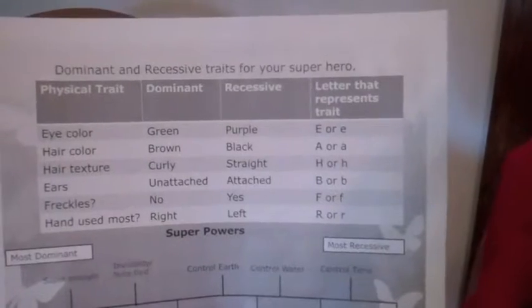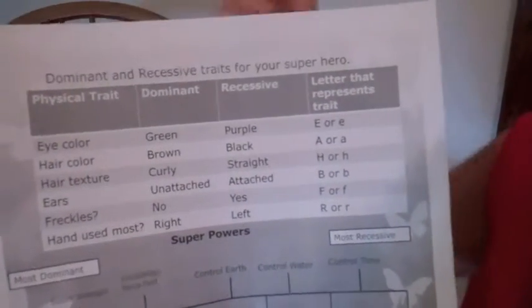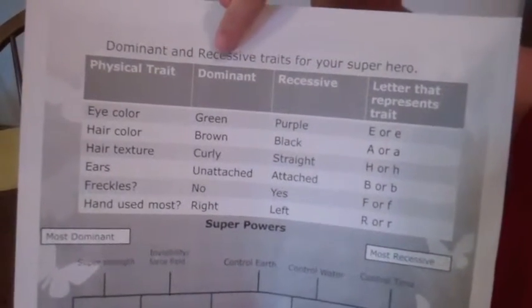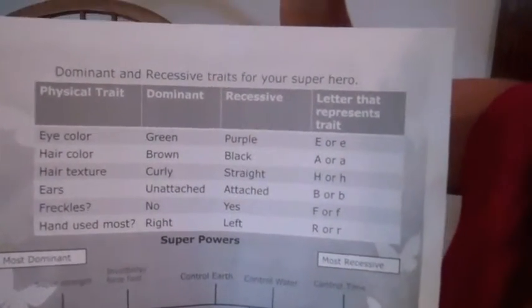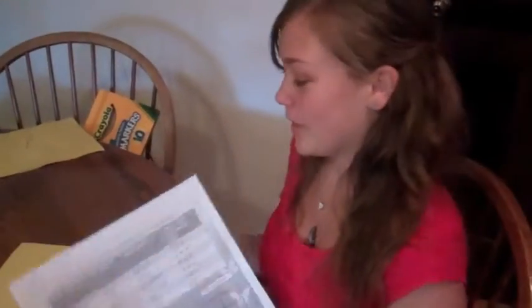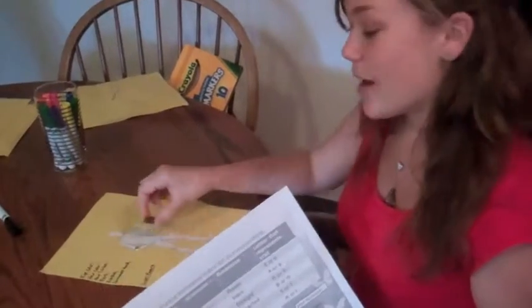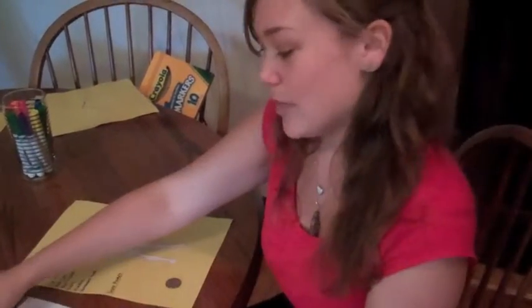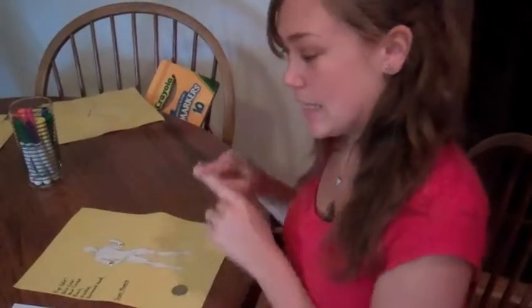I'm going to say I want green eyes. With green being dominant, there could be two choices — dominant dominant, or dominant recessive. So we're going to flip a coin to see which one it is. It's tails, and that means it's homozygous, which means that it's the same. So it's dominant dominant, or big E, big E.